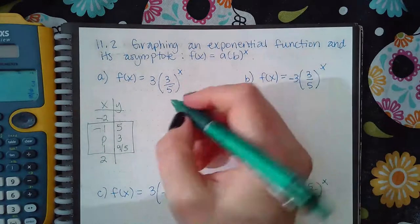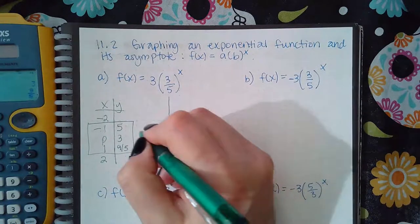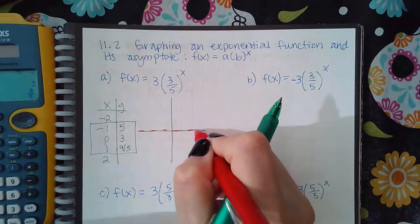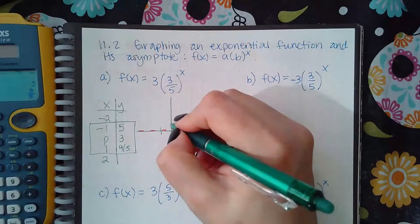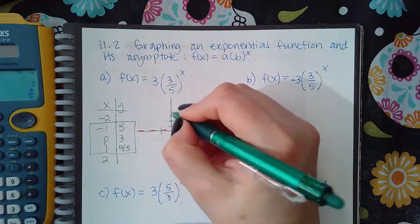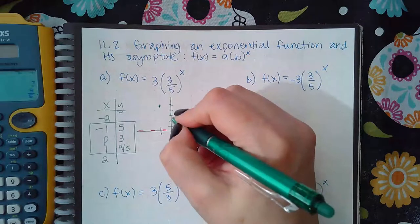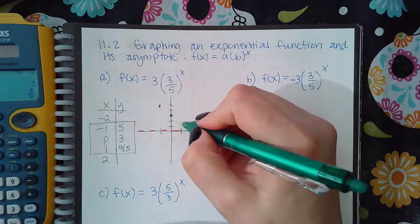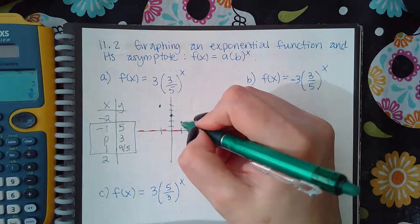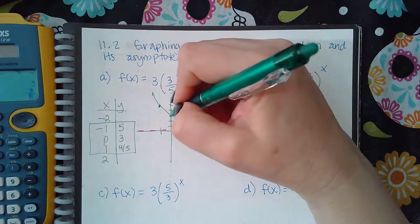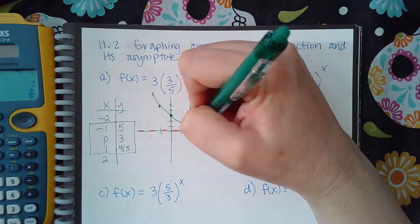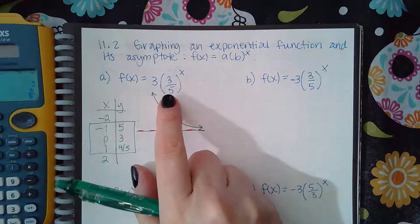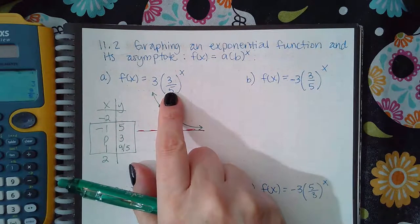Once you have all three of those, make sure you also plot your horizontal asymptote. So make sure you have a dotted line on top of the x-axis. And then you have negative one and five. Then you have zero and three. And then you have one and one and four fifths. And so then it's going up and then this way. Now it's going to the left because the base, not the coefficient, the base is a number less than one.